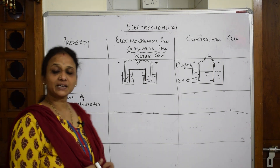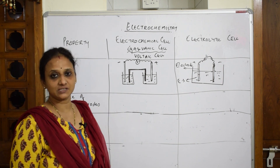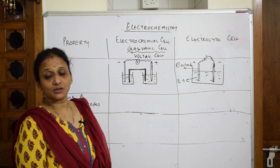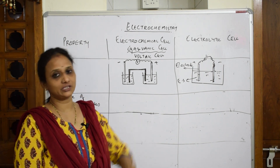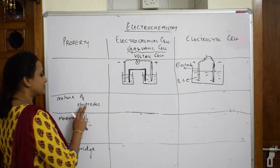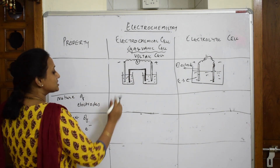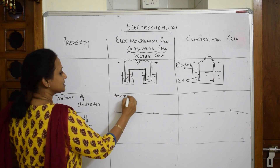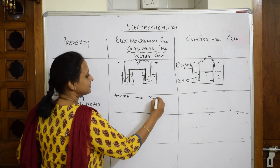Now let's look at the nature of the electrodes. We already discussed that electrochemical cells have two half cells and two electrodes. The important point about electrode polarity: in electrochemical cells, the anode is negative. In electrolytic cells, the anode is positive.